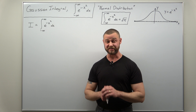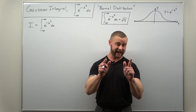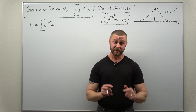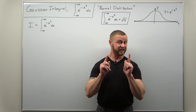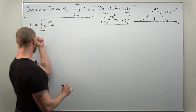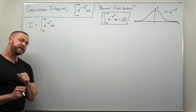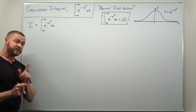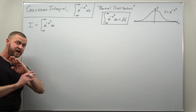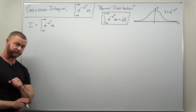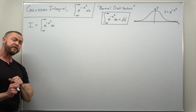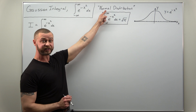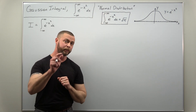Greetings fellow mathematicians. We're going to take a look at the Gaussian integral, which is the simplest difficult integral you can encounter. The Gaussian integral is really simple to define — we're going to call it I, defined as the integral from negative infinity to infinity of e to the negative x squared. That function has no basic antiderivative, so we're going to need a trick. You might have encountered the Gaussian integral earlier without realizing it, maybe in a statistics course when you learned about the normal distribution.